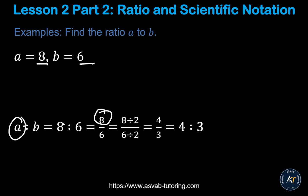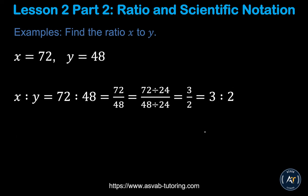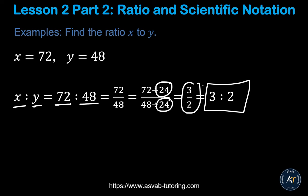Now you have to simplify. A ratio should be expressed in its simplest form, just like a fraction. Dividing both sides by 2 gives you 4 over 3, so that is 4 ratio 3. For another example, if x equals 72 and y equals 48, then x ratio y is 72 ratio 48. Dividing top and bottom by 24 gives you 3 over 2, so the ratio is 3 ratio 2.